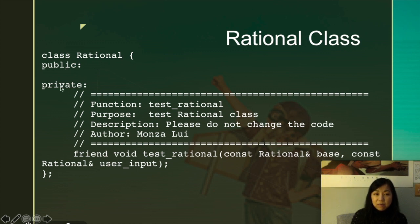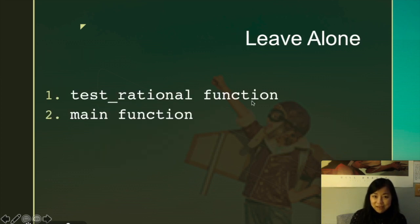The public is all empty. The private has one function, which is called test_rational. That is actually my test code.